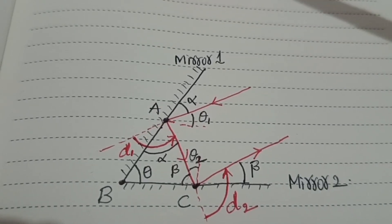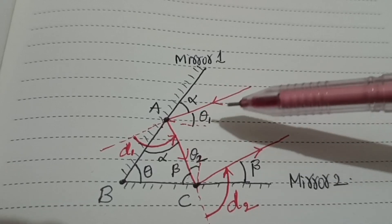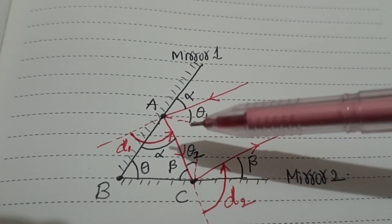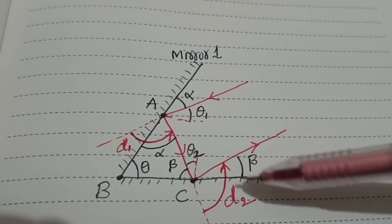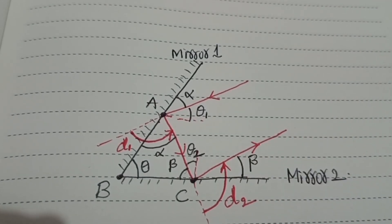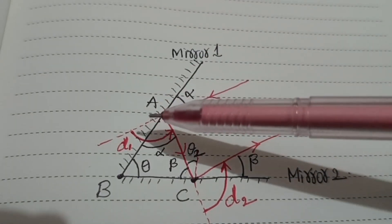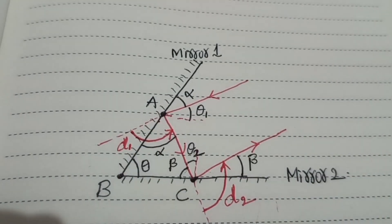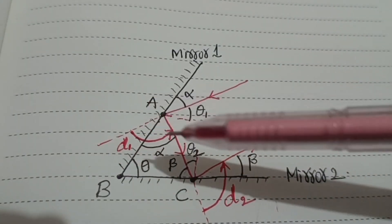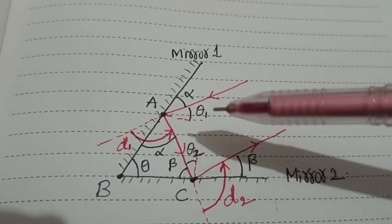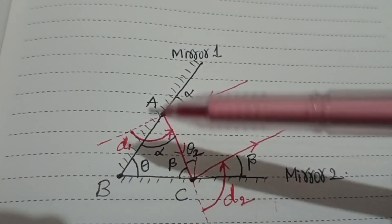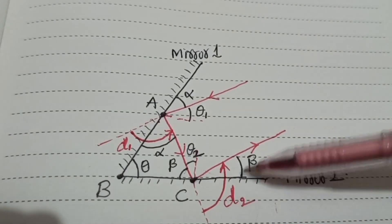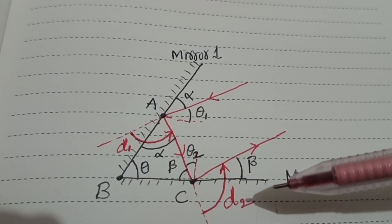We know the angle of deviation. Here theta 1 is the angle of incidence where alpha is the glancing angle for mirror 1. Similarly, for mirror 2, theta 2 is the angle of incidence and beta is the glancing angle. For a single mirror, the deviation is given by d1 = 180° - 2θ1, and for the second mirror, d2 = 180° - 2θ2.